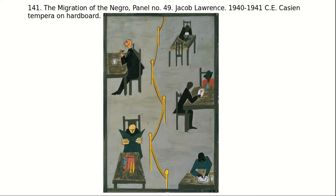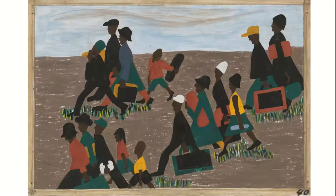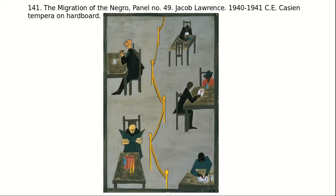Part of the function of his artworks was bringing African-American experience to life. One way he did this was with his color palette — he used neutral colors, browns and blacks, juxtaposed with really bright vivid colors. The Migration Series depicts the migration of African-American migrant workers.